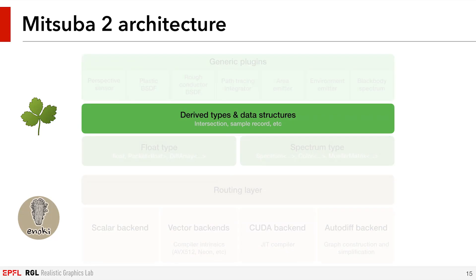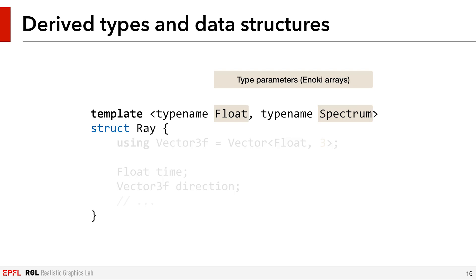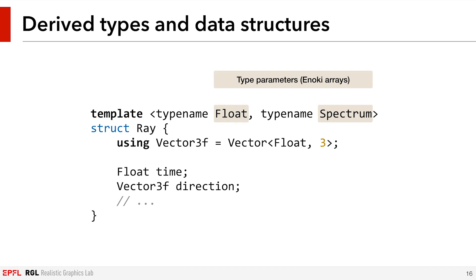Now we are going to look into more details on the renderer side. Based on the float and spectrum type parameters, which will be Enoki arrays, we derive all of the necessary related types, data structures, and algorithms to build a complete physically based renderer. For instance, rays will be manipulated by many parts of the renderer, so we declare a ray data structure but template it over the float and spectrum types. From these two types, we compute all related types like 3D vectors, points, etc., and then declare the structure's fields as usual.